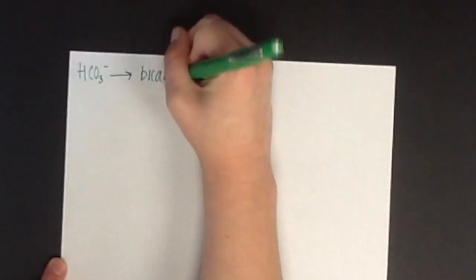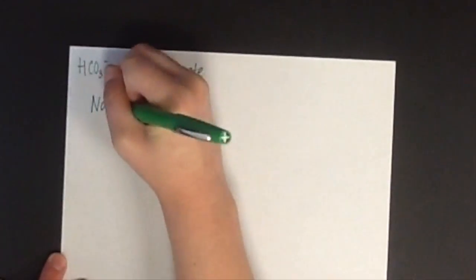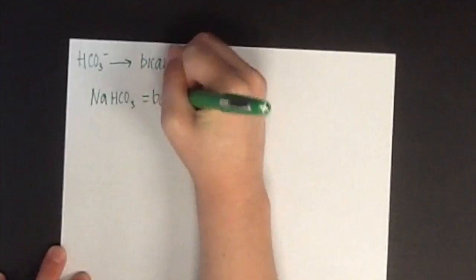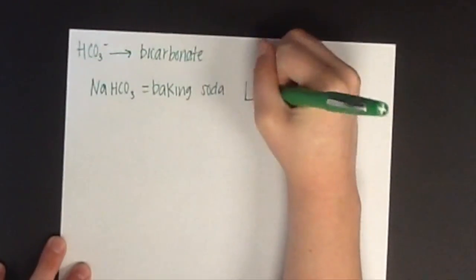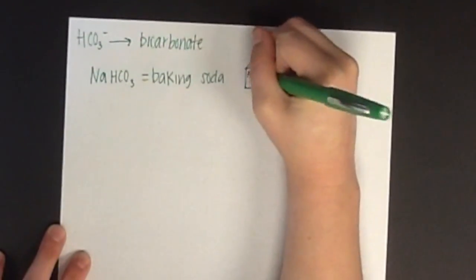If a compound contains the ion HCO3-, then it is called a bicarbonate. A popular example of this is sodium bicarbonate, NaHCO3, which is known as baking soda.